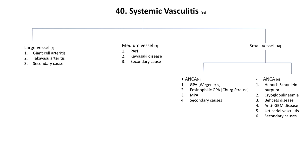Vasculitis describes a heterogeneous group of diseases that share the definitive feature of blood vessel wall inflammation. Vasculitis can involve blood vessels of virtually any type, size, and location within the body, and can lead to partial or complete luminal compromise with ensuing ischemia of the related tissues.